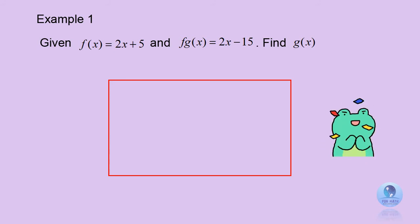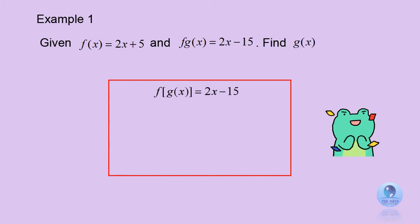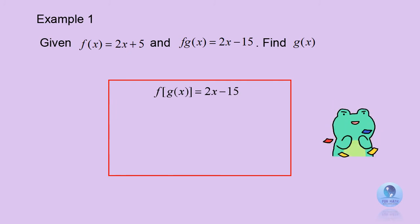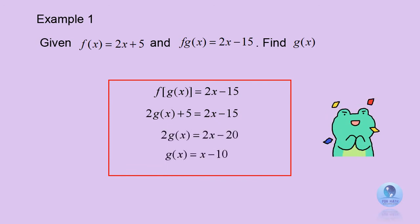Let's look at this example. You are given f of x equals 2x plus 5, and f of g of x equals 2x minus 15. Find g of x. This question asks you to find the innermost function, g of x. Therefore, substitute g of x into f of x. You get 2 multiplied by g of x, plus 5, equals 2x minus 15. And therefore, you get the final answer: g of x equals x minus 10.